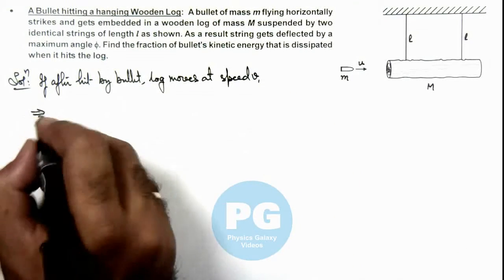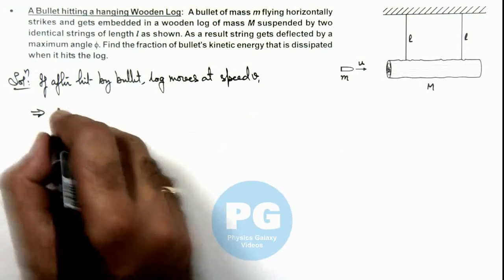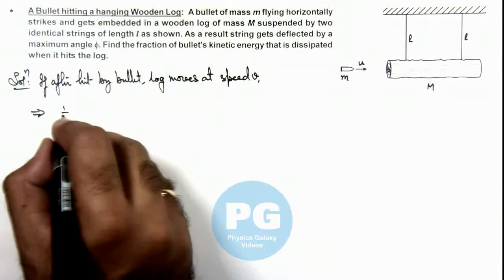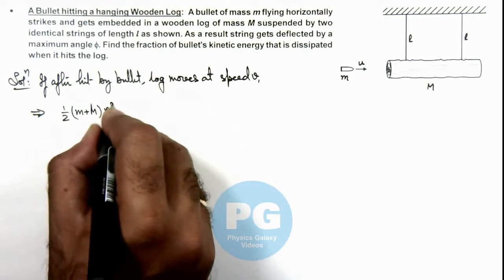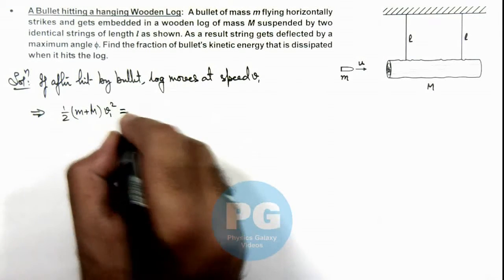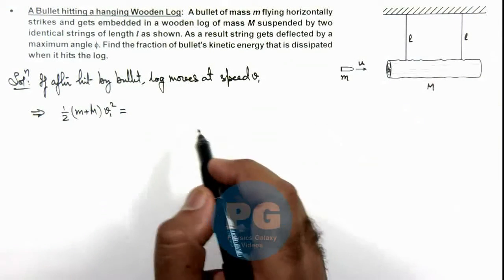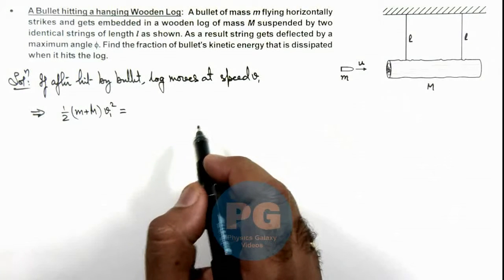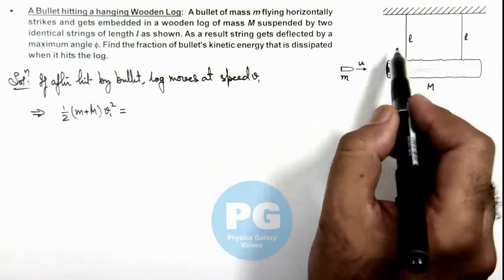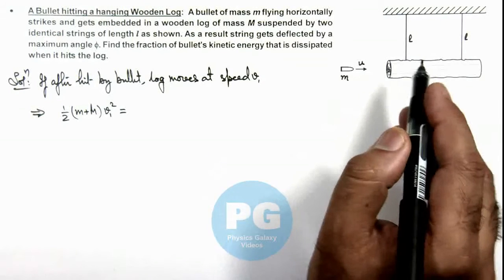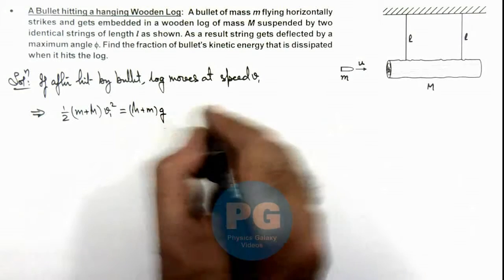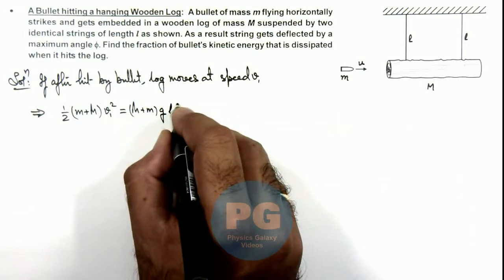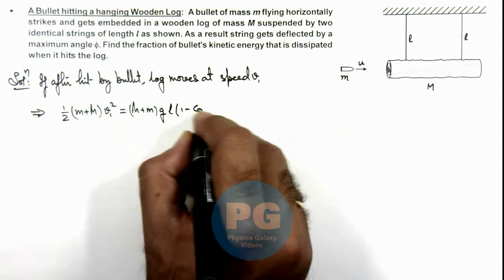This implies we can use the initial kinetic energy after hit, which will be ½(m + M)v₁², and it should be equal to the work done against gravity. As we are given that strings get deflected by an angle φ, we can write it as (m + M)gh where the value of h is l(1 - cos φ).